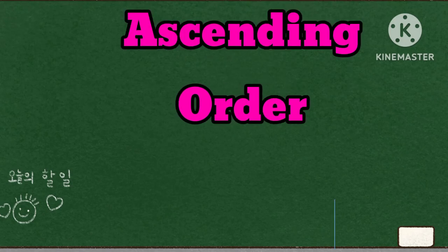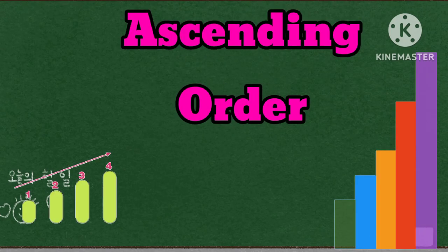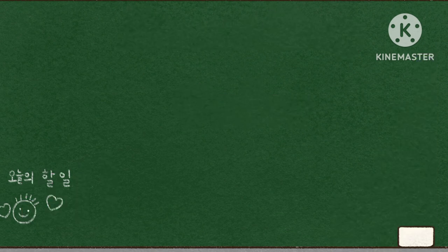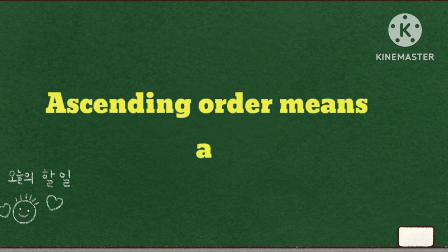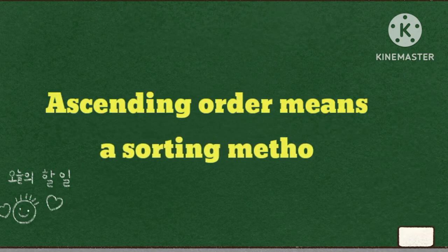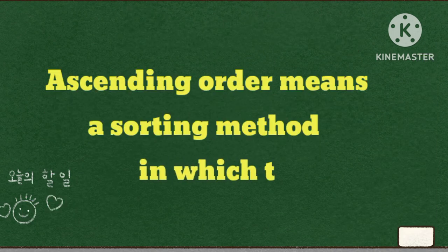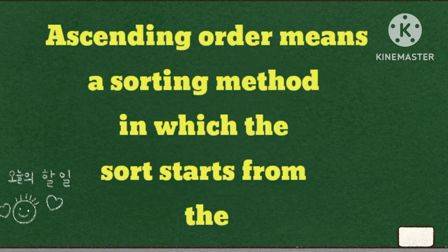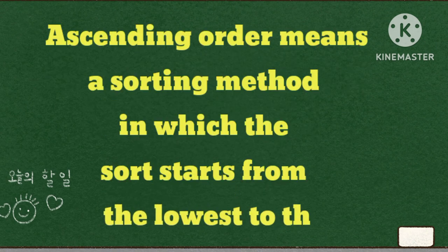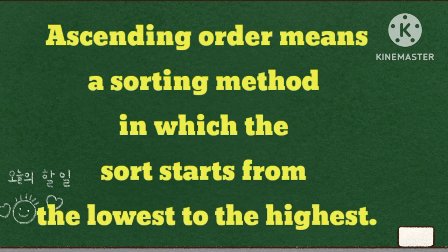Hello kids, today our topic is ascending order. Ascending order means a sorting method in which the sort starts from the lowest to the highest.